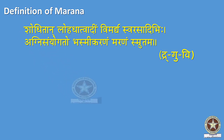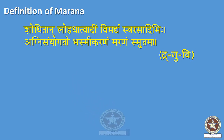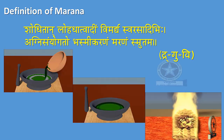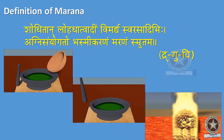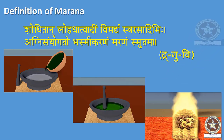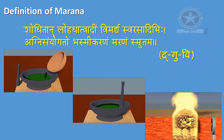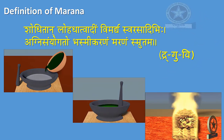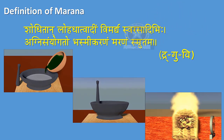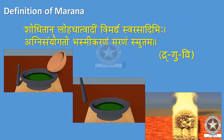Definition: 'Shoditan loha dhat vadin vimardya swarasadi bihi, agni samyogato bhasti karanam maranam smritam.' Reference: Dravyaguna Vignana. Trituration of metals and minerals with liquid extracts of medicinal herbs and later their exposure to heat is called the process of calcination — that is, Marana.